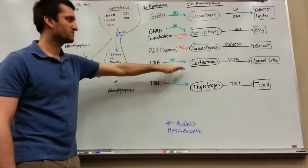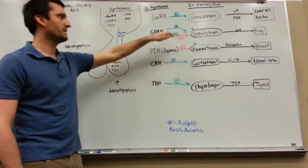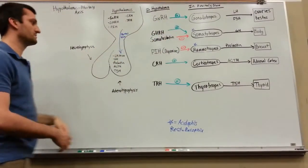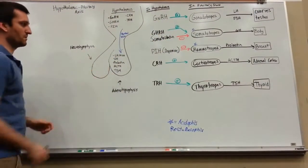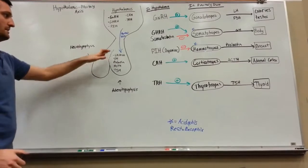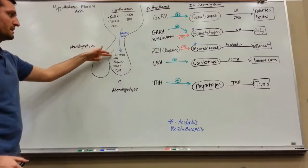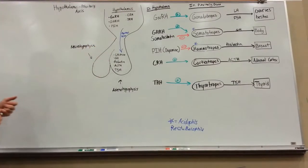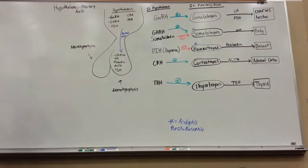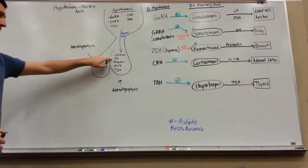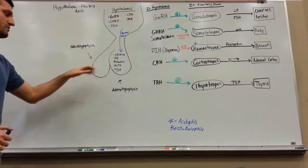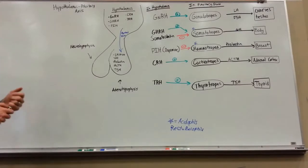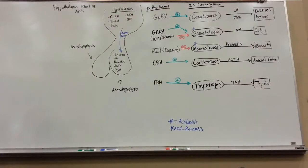You're going to have the thyrotropes, corticotropes, mammotropes, somatotropes, and gonadotropes. Each of those is going to secrete a different hormone: luteinizing hormone and follicle stimulating hormone (LH/FSH), growth hormone, prolactin, adrenocorticotropic hormone, and thyroid stimulating hormone.